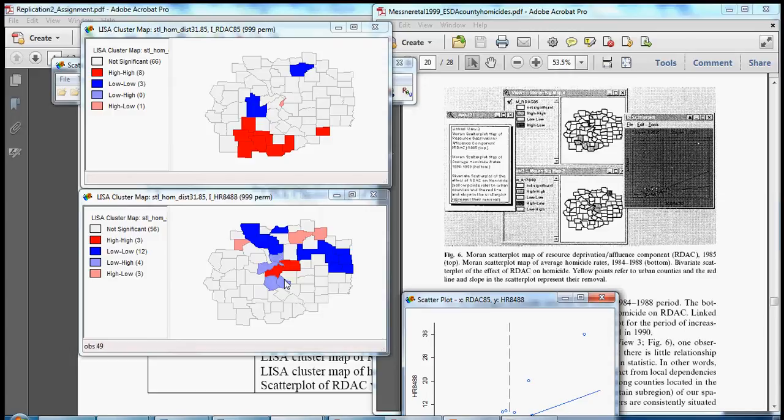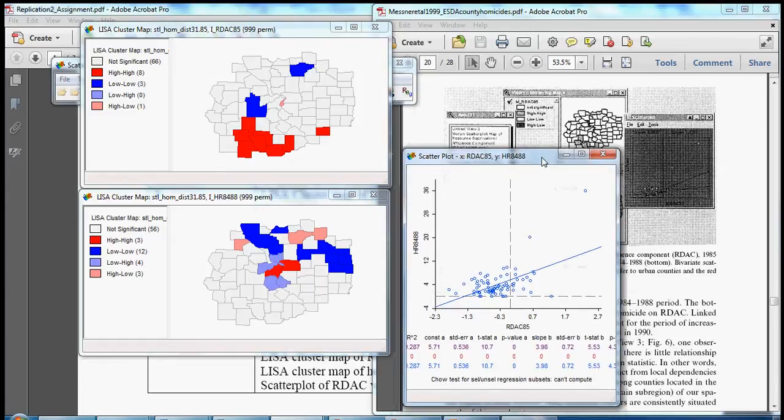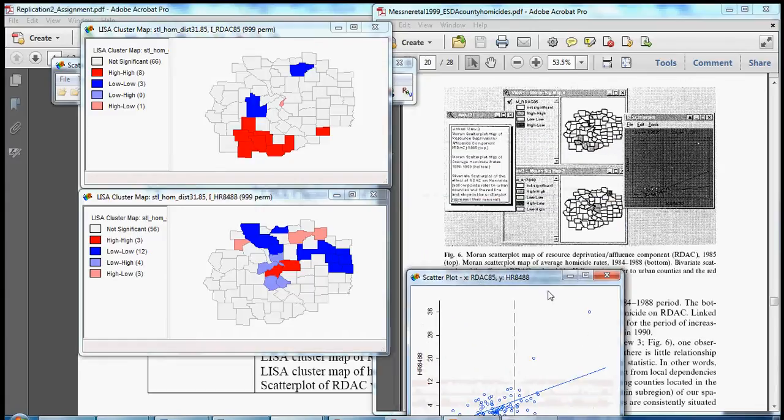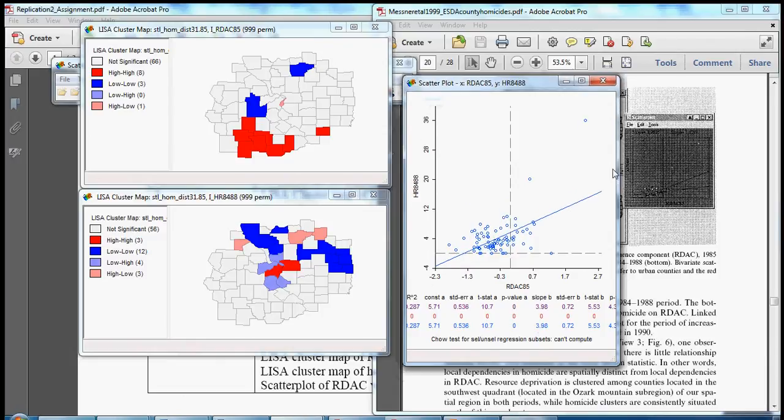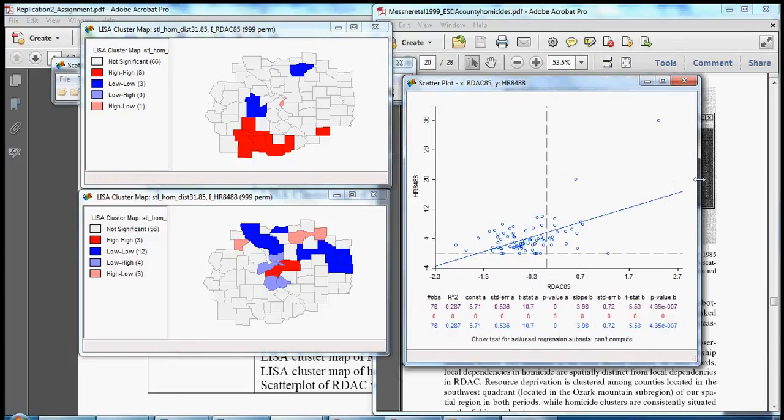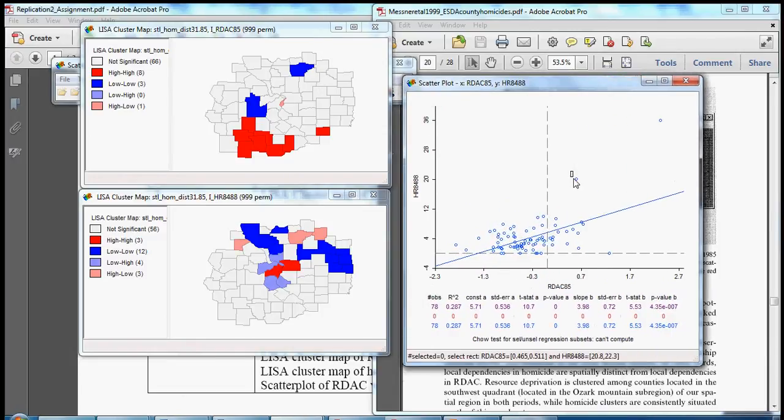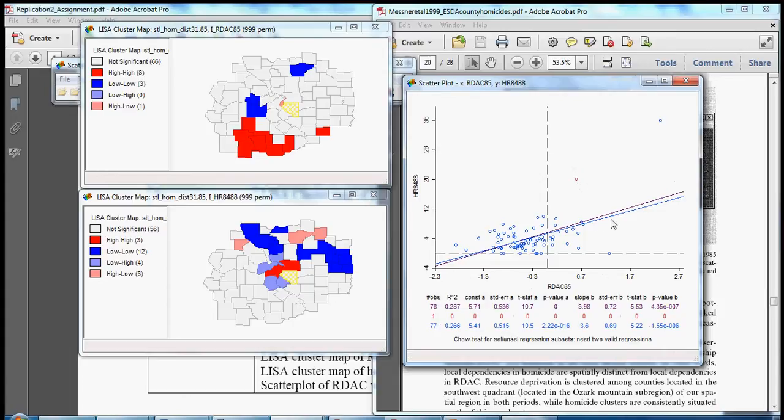High-high cluster right in this urban core in the center. And then we've got a scatter plot with a bivariate graph of the relationship between resource deprivation and the affluence component and homicide rates. One nice feature of GEODA as noted by the authors is that as you select points the regression line, the fitted line, changes.